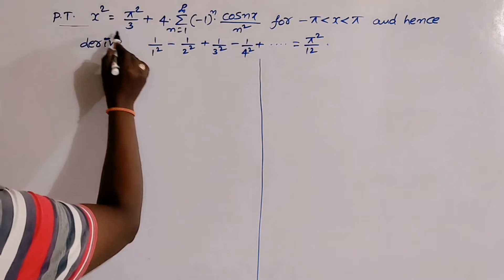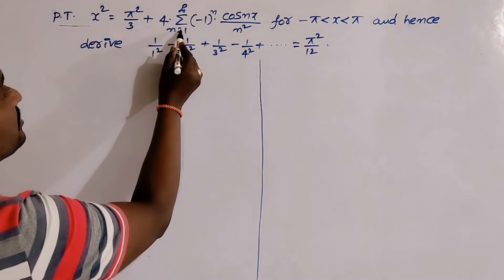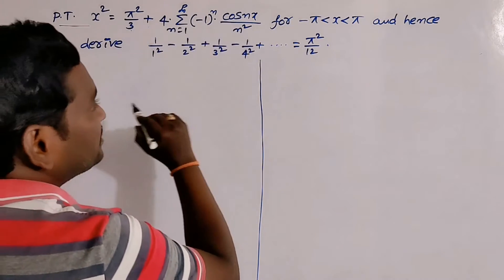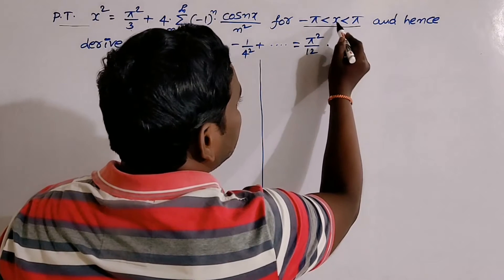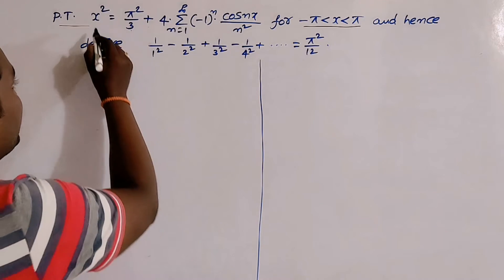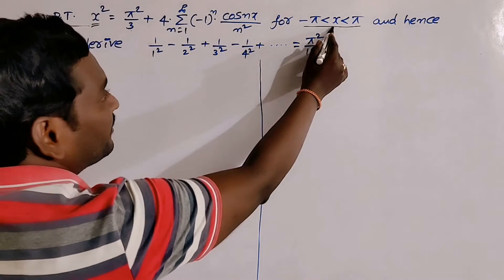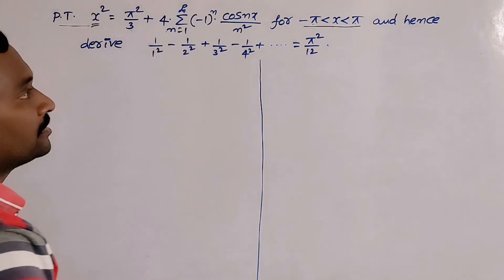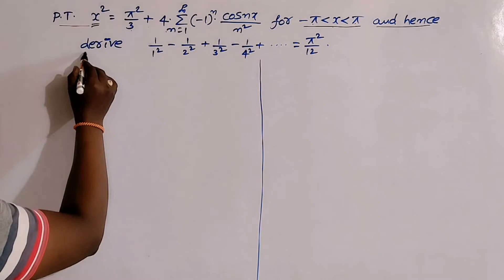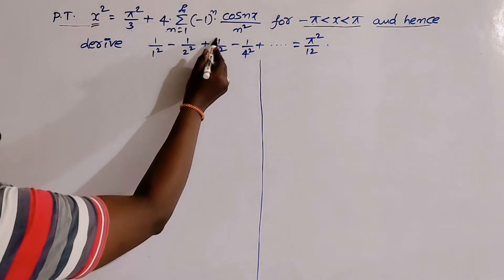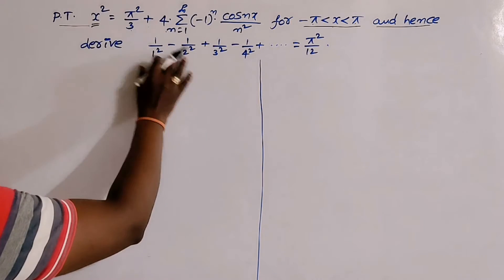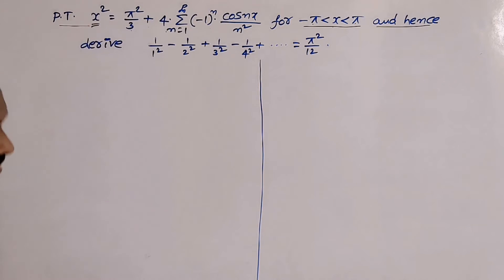Prove that x² = π²/3 + 4 times the summation from n=1 to infinity of (−1)ⁿ · cos(nx)/n², for −π < x < π. We also need to derive 1/1² − 1/2² + 1/3² − 1/4² + ... = π²/12 using this Fourier series expansion of x².